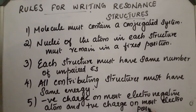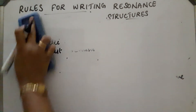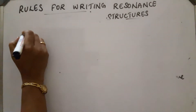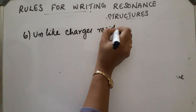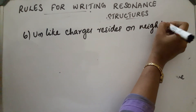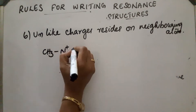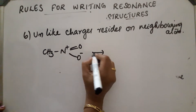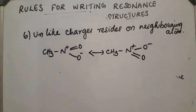Sixth rule: unlike charges must reside on neighboring atoms. For example, in CH₃NO₂, the nitrogen has a positive charge (N⁺ double bond O) and O⁻. If the distance between the positive and negative charge increases, the compound becomes less stable. So unlike charges must reside on neighboring atoms.